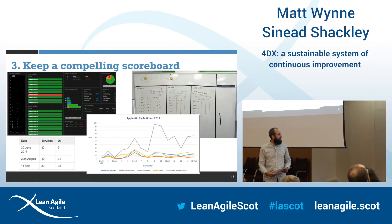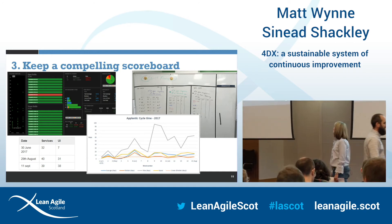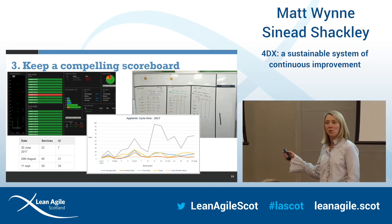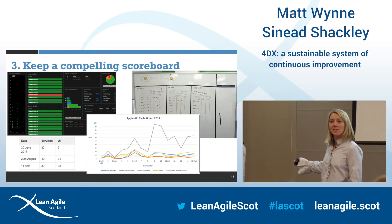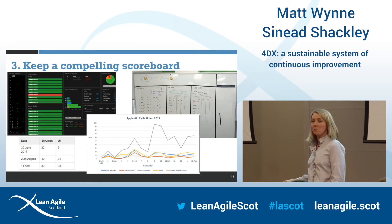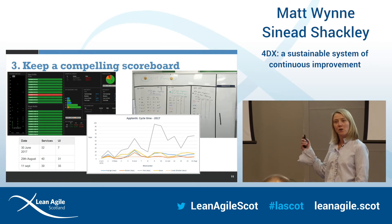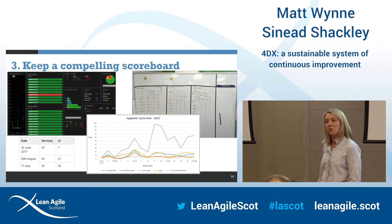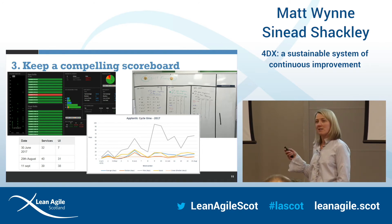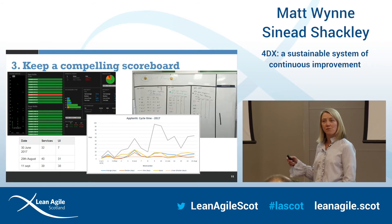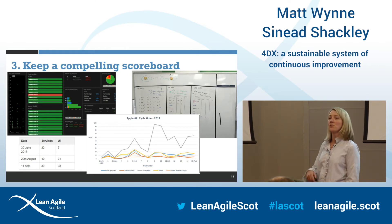Discipline three is around keeping a compelling scoreboard. Some of the scoreboards teams in Liberty IT have put together are pretty low fidelity — just tables on a wiki page — while others are more high fidelity, with an Atlas board plugged into JIRA, Bamboo, and Jenkins, pulling all their numbers into a dashboard. The key thing is that it's visible. It's done by the team, for the team. They're up in the team areas, they're talking about it every day, and they use it as an input to discipline four.